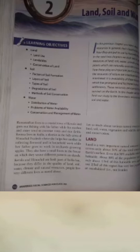The learning objectives of this chapter are land, soil, factors of soil formation, layers of soil, types of soil, degradation of soil and methods of soil conservation and water, about water distribution, problem of water availability and the conservation and management of water.